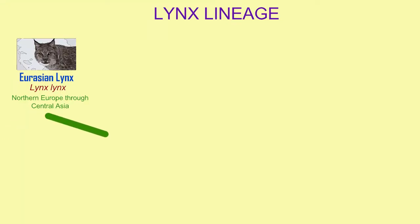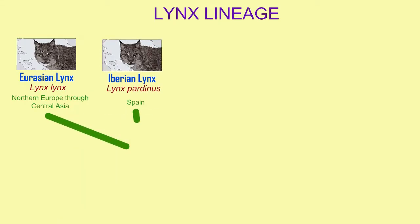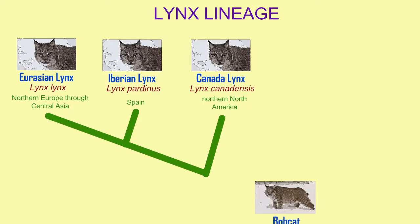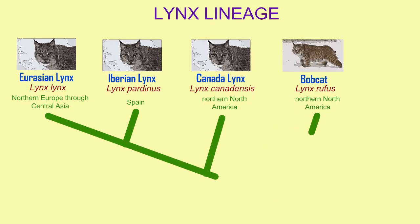The genus Lynx includes four modern species which are more closely related to each other than to any cat outside this lynx lineage. They include the Eurasian lynx, the Iberian lynx, the Canada lynx, and the bobcat.